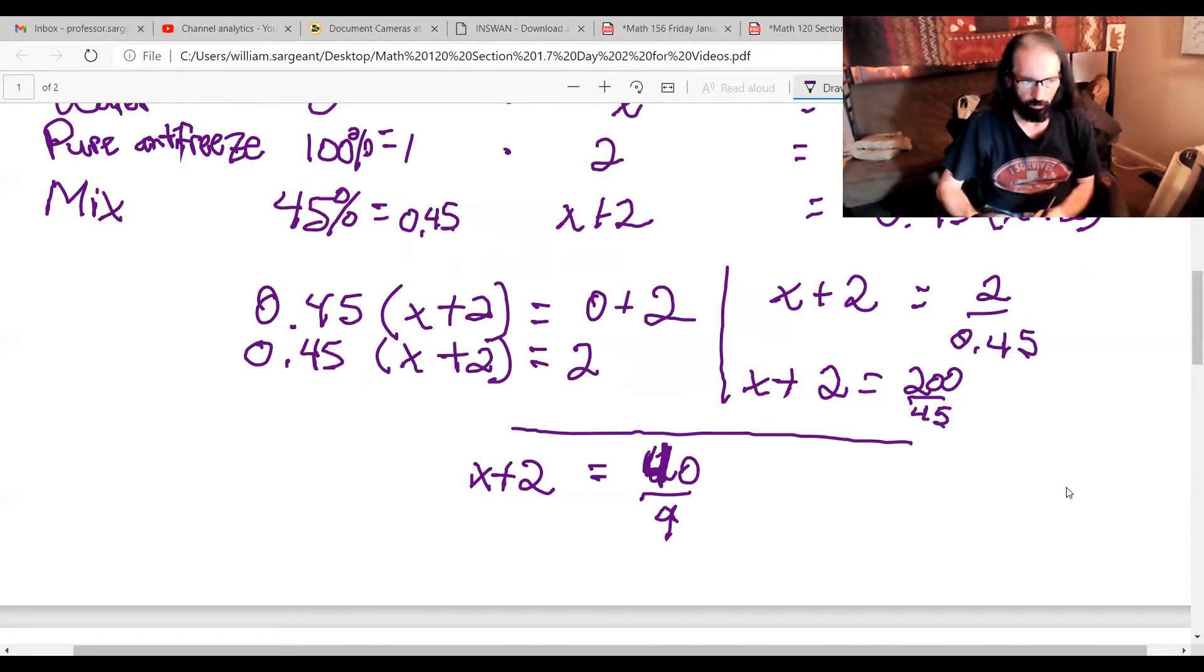200 divided by 5 and 20 divided by 5, that should be 40 over 9. Well since there's nothing that would still go into 40 and 9 besides 1, it's time to subtract the 2.